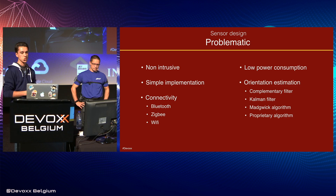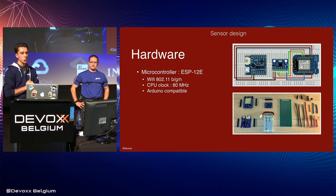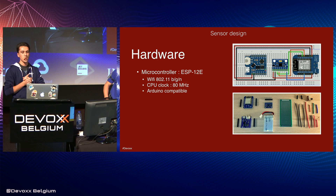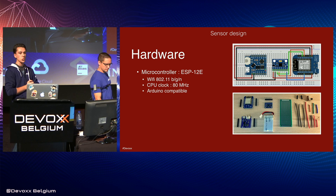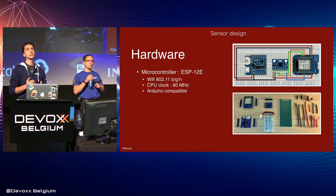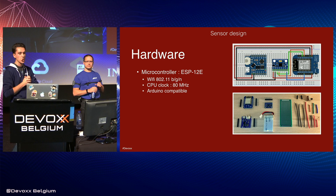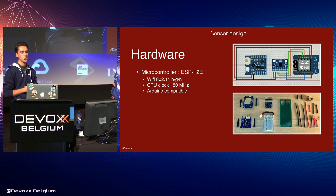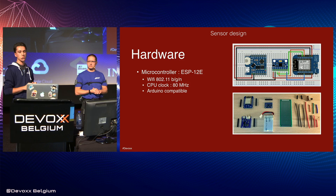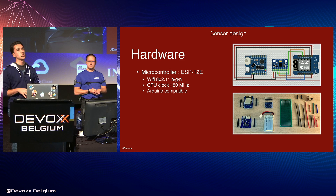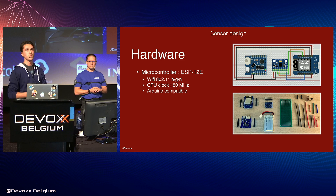For the hardware, we chose to use consumer electronics to simplify the hardware design of the sensor. For the microcontroller, we selected a well-known chip in the DIY world: an ESP12E. This chip is popular for its low price and has two important advantages. First, it has Wi-Fi connection embedded, permitting you to create your own network or directly connect the board to an existing Wi-Fi network. This microcontroller is also compatible with Arduino, an open source prototyping platform, and thanks to this integration we can significantly reduce the development time for the prototype.